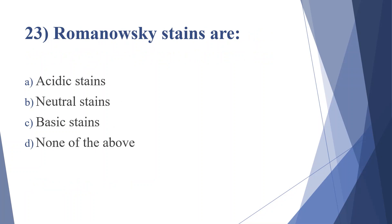Twenty-third question: Romanowski stains are — option A: acidic stains, option B: neutral stains, option C: basic stains, option D: none of the above. Answer is option B, neutral stains.